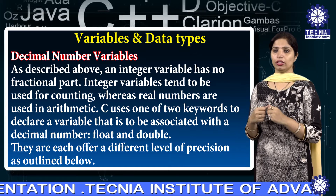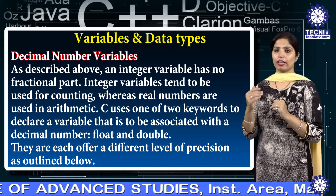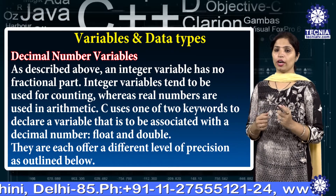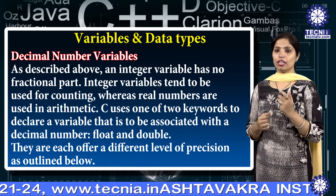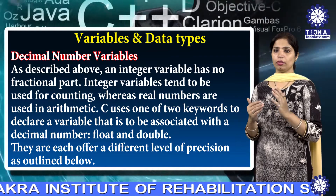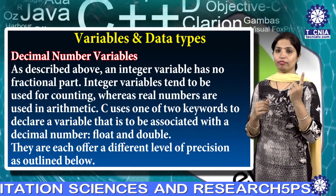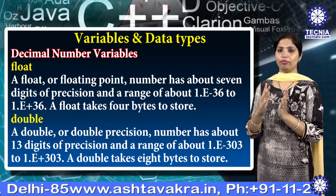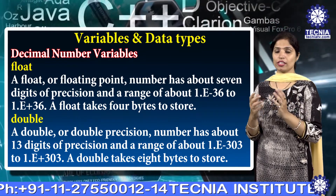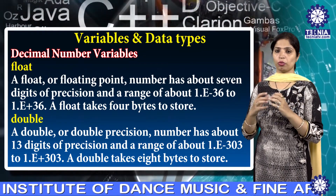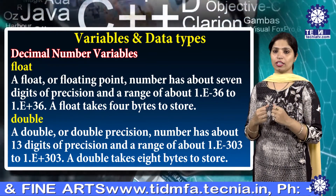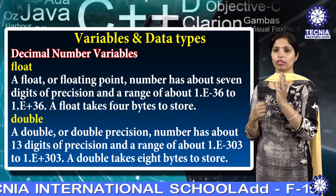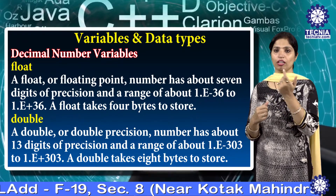The second type is decimal number variables, also called float number variables. An integer variable has no fractional part; integer variables tend to be used for counting, whereas real numbers are used in arithmetic operations. C uses two keywords to declare a variable associated with a decimal number: float and double. A float has about seven digits of precision and takes four bytes to store. A double has about 13 digits of precision and takes eight bytes to store. For example, writing float total makes total a floating point variable.